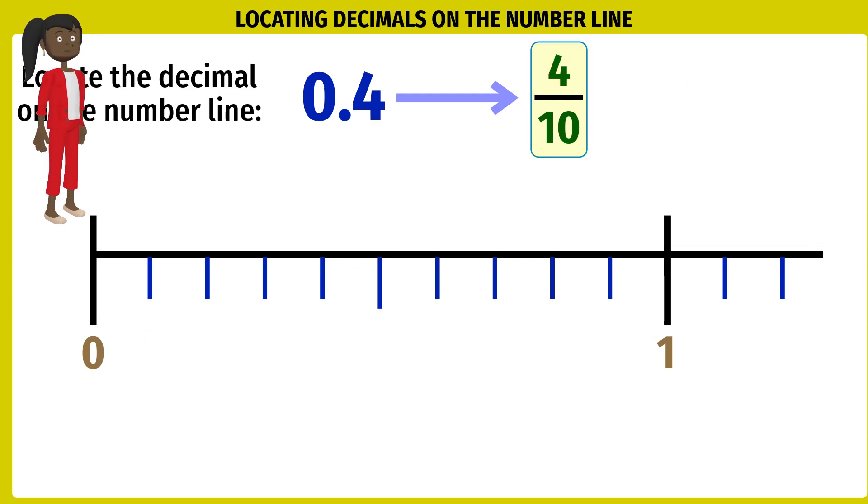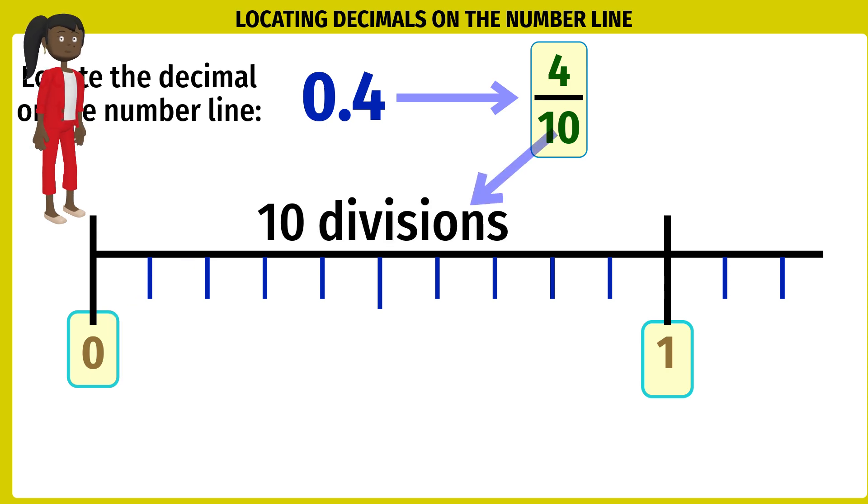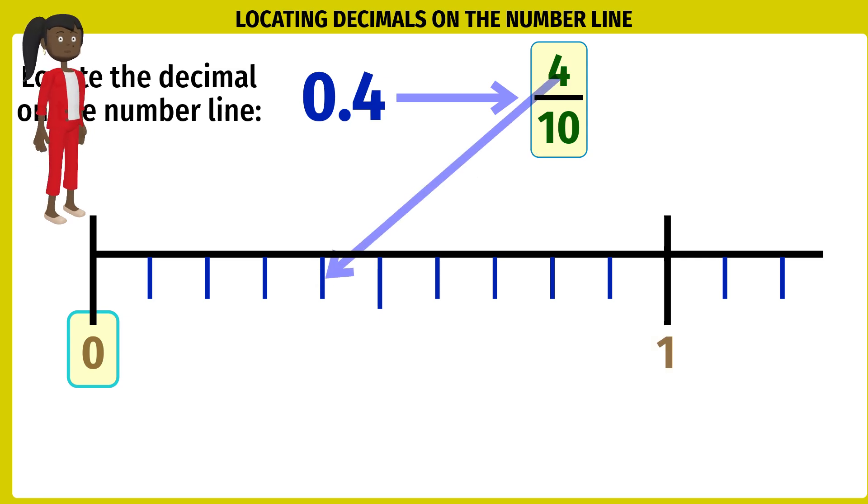Let's revise. The whole number 0 tells us the location of the number on the number line. It is located between 0 and 0 plus 1 on the number line. Denominator 10 tells us the number of divisions between 0 and 1, 10 divisions. Numerator 4 tells us the exact location.